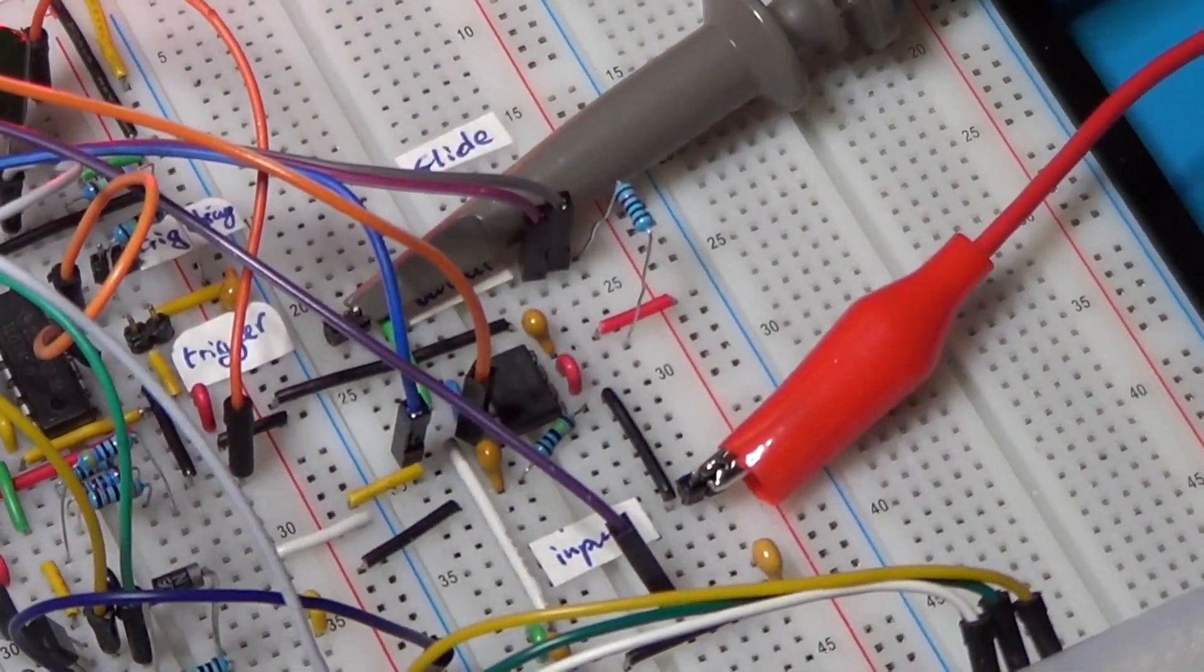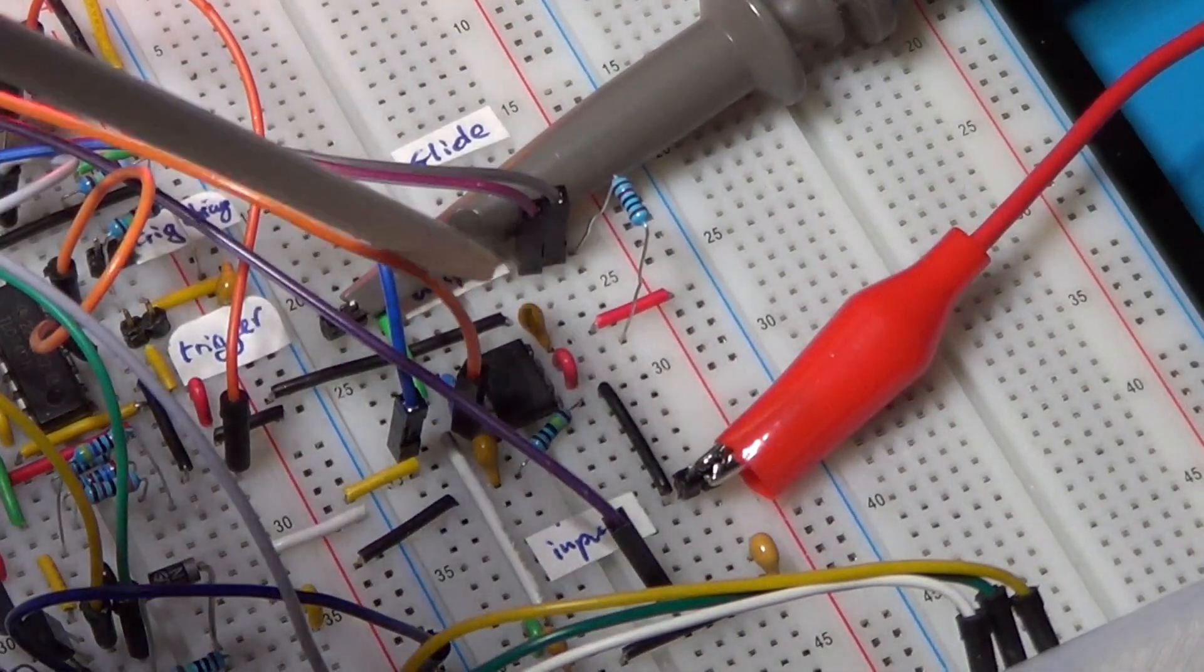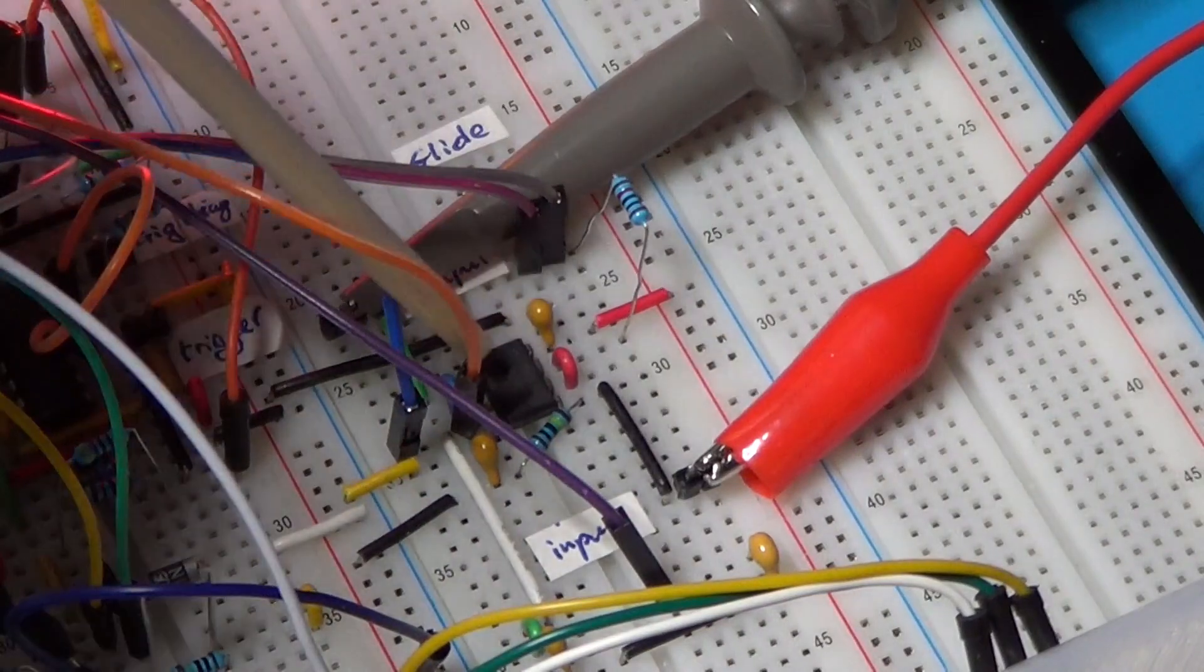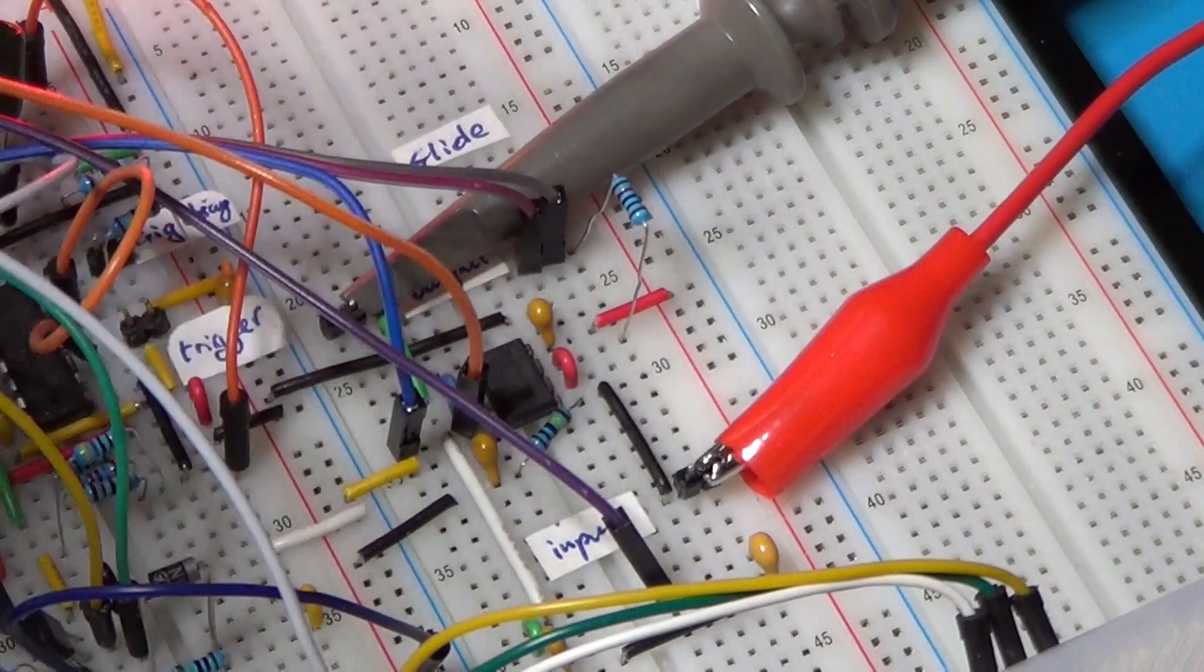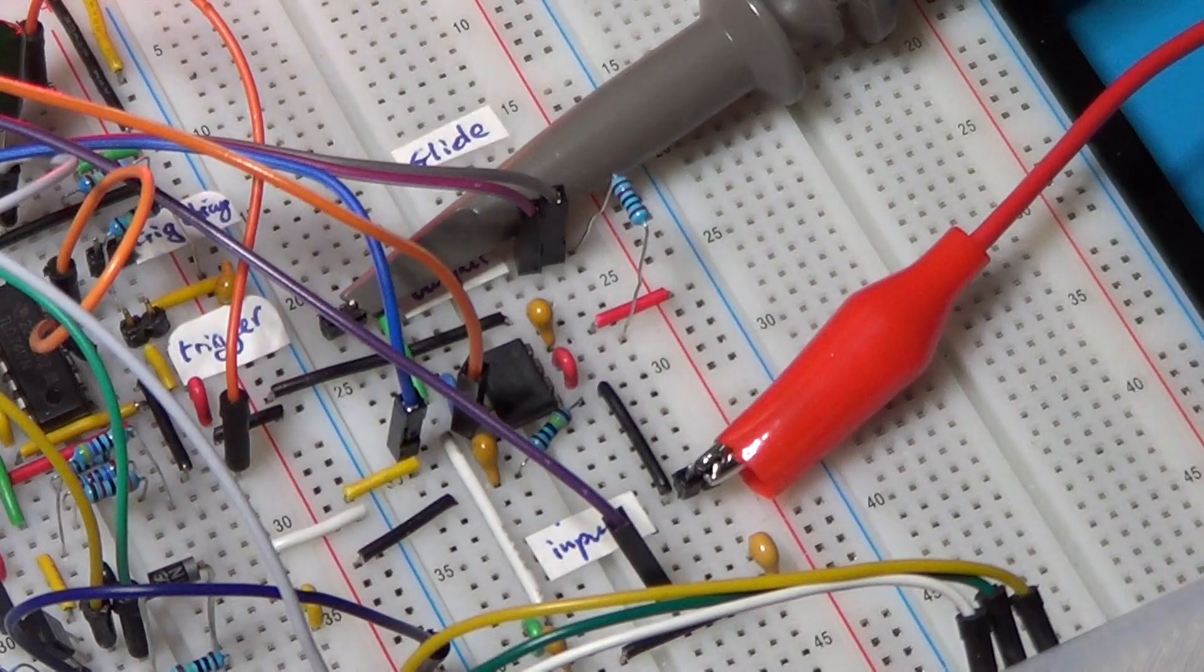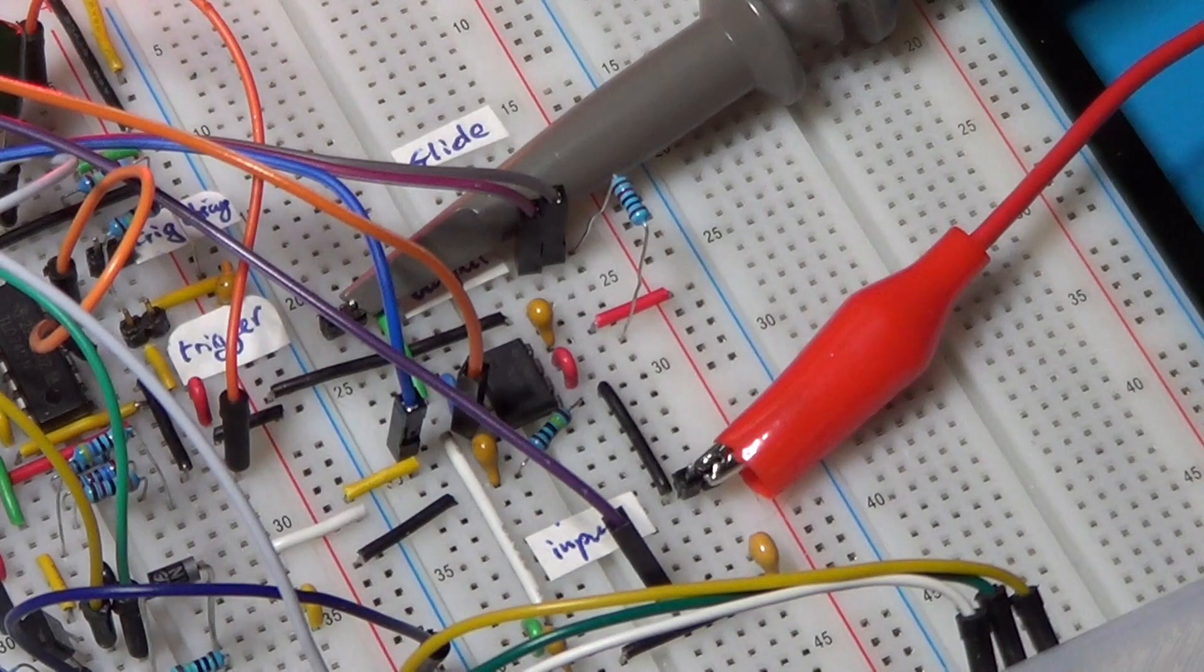This one is a TL072 containing the two op-amps from the schematic. Like the TL074 used in the sample and hold circuit, this one also has JFET inputs.